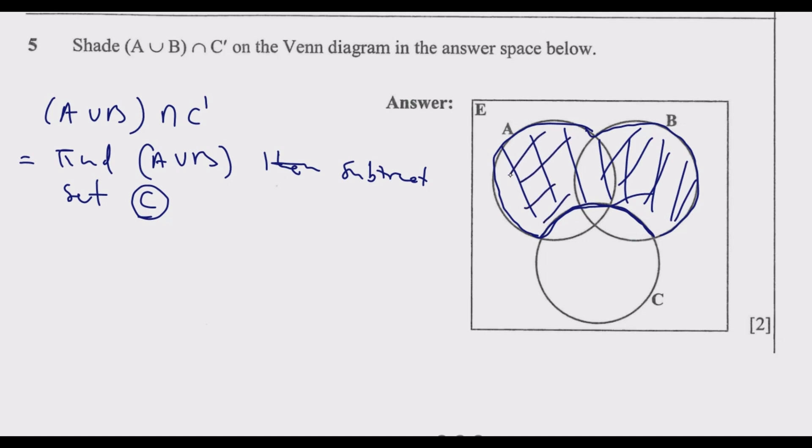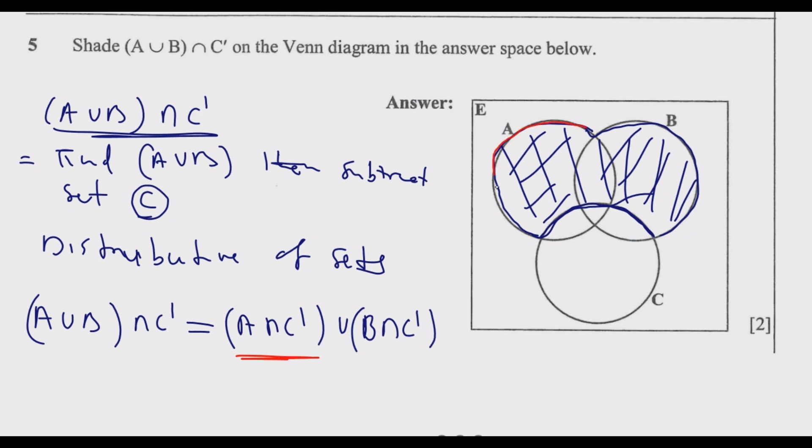The other approach is to use distributive law of sets. Using distributive law of sets, you still end up with the same answer. So (A ∪ B) ∩ C' equals (A ∩ C') ∪ (B ∩ C'). What this tells us is you go to set A, all of set A, then you take out everything which is in C.